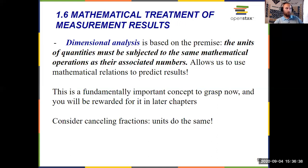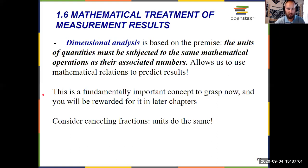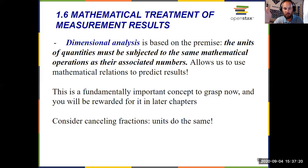We've got this definition: units of quantities must be subjected to the same mathematical operations as their associated numbers. To simplify it even further, think about fractions. If you have a fraction 3 over 3, it cancels out to 1, and anything multiplied by 1 is itself, so it doesn't change the calculation. Units will do the same thing in those fractions. If I've got milliliters on top and the bottom — milliliters over milliliters — just like 3 over 3, it cancels out to 1, and it no longer affects the rest of the function.